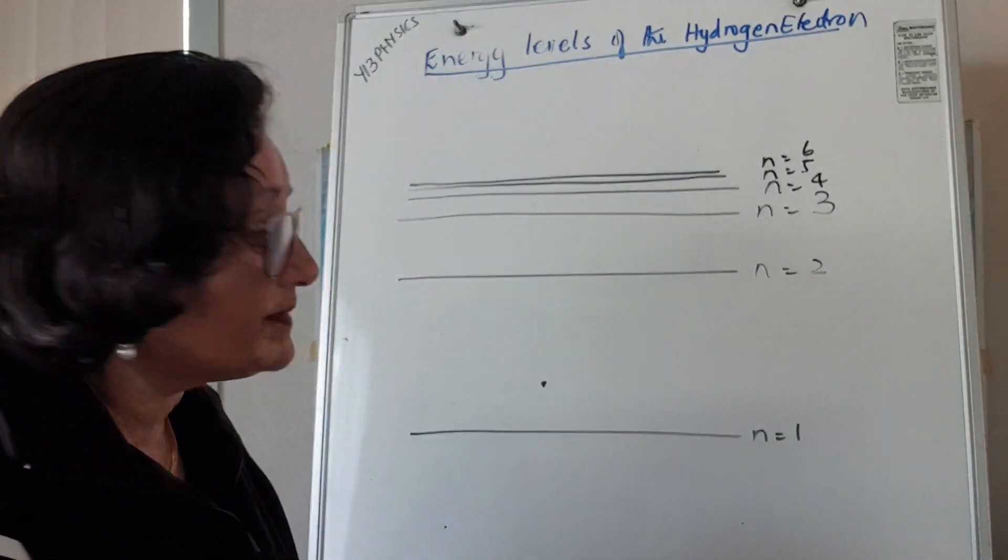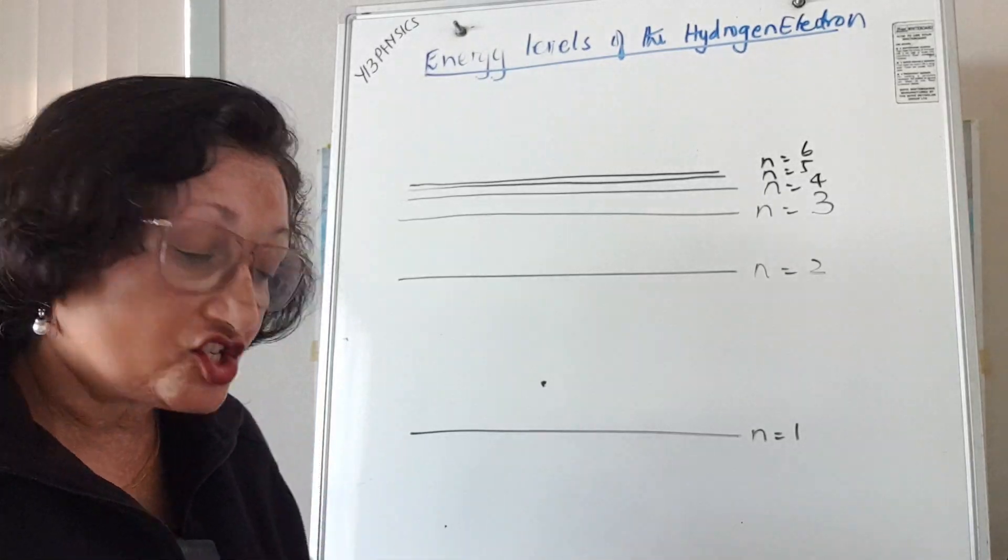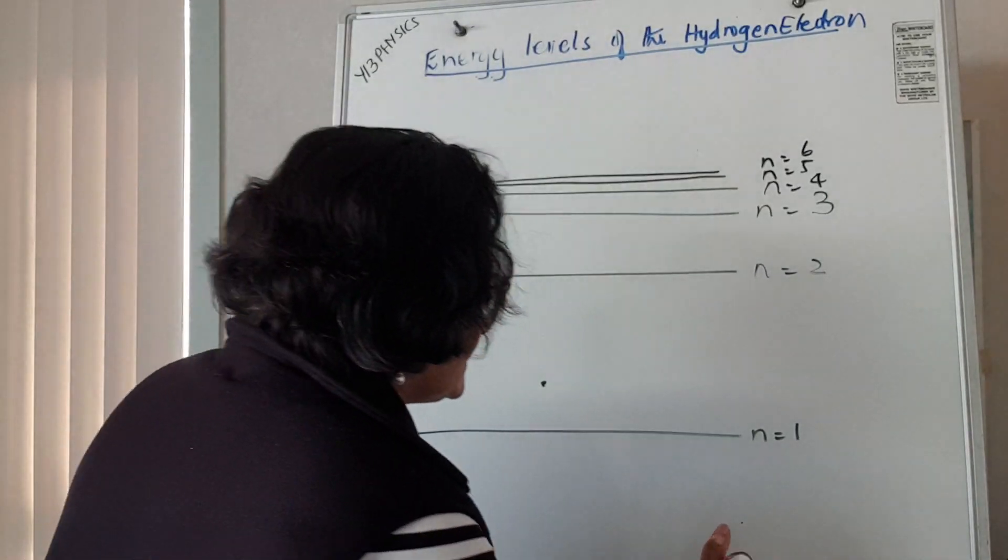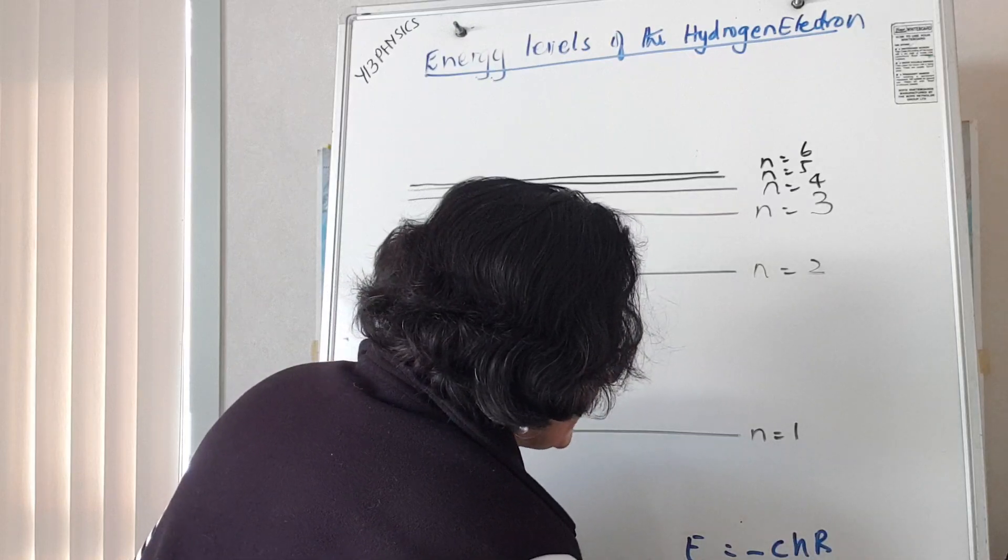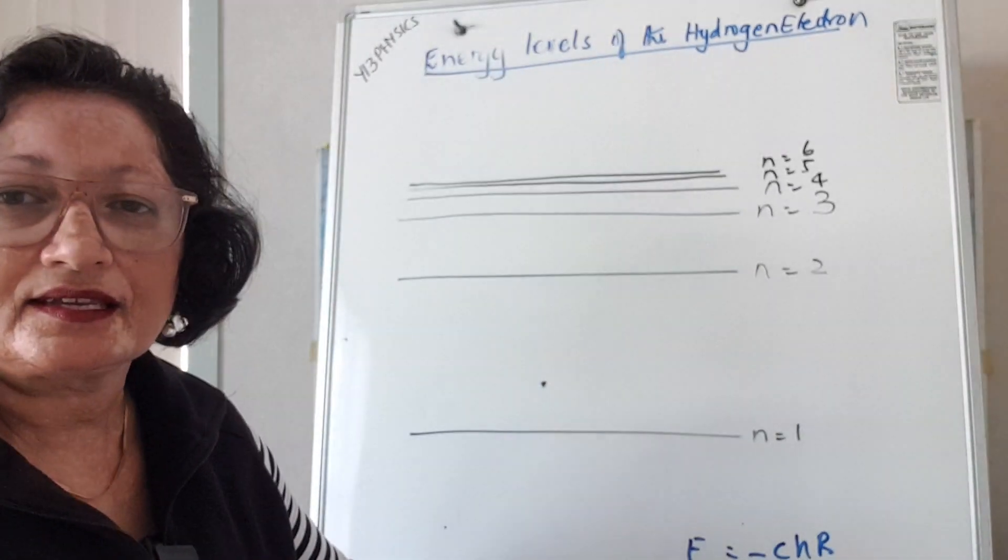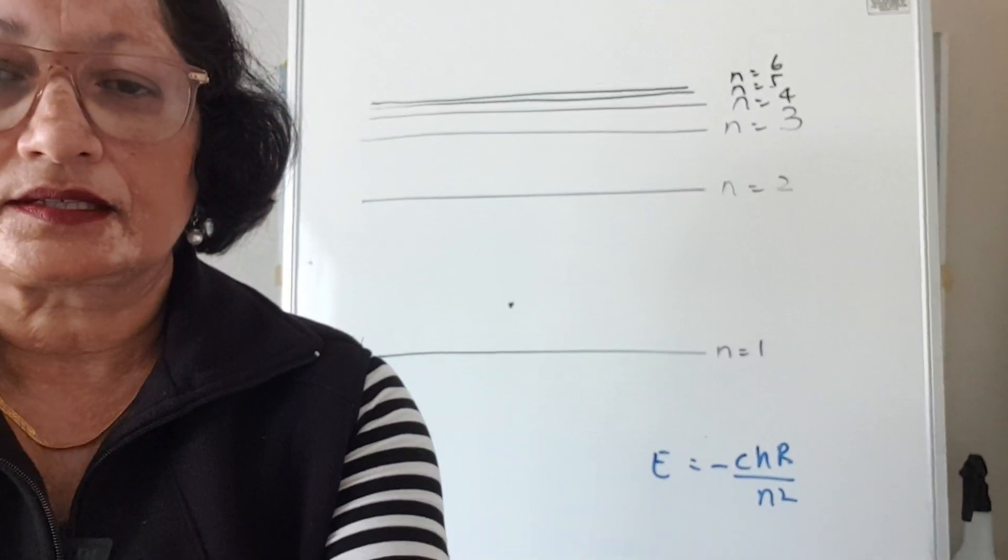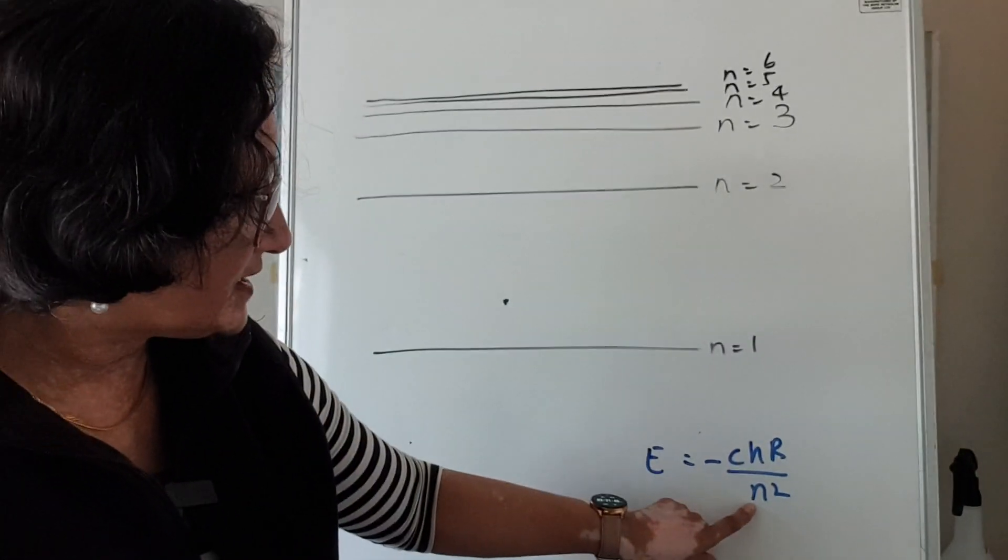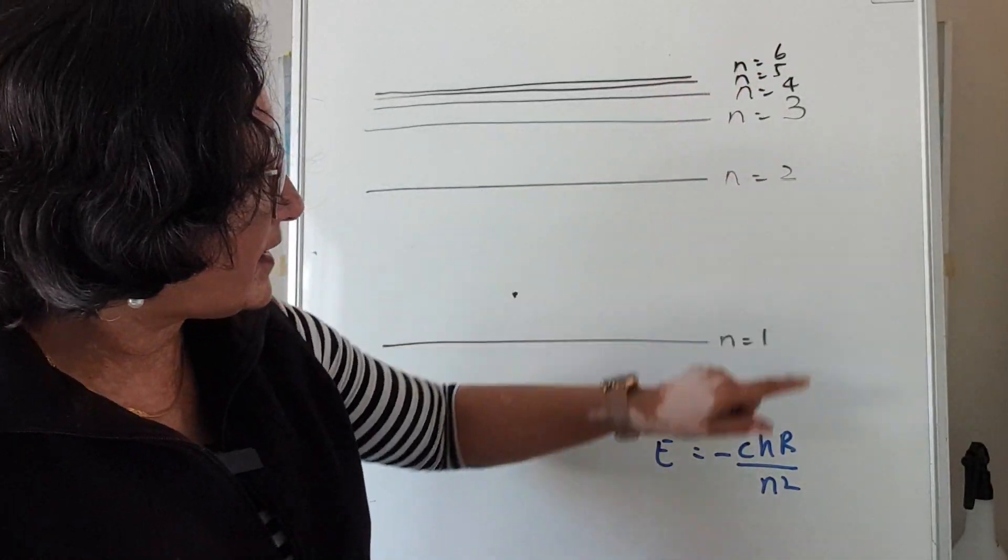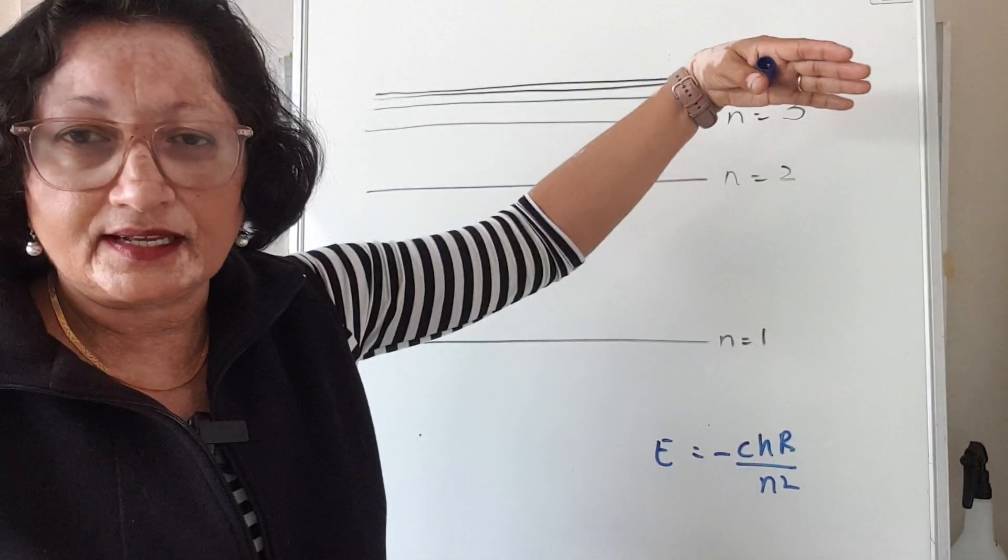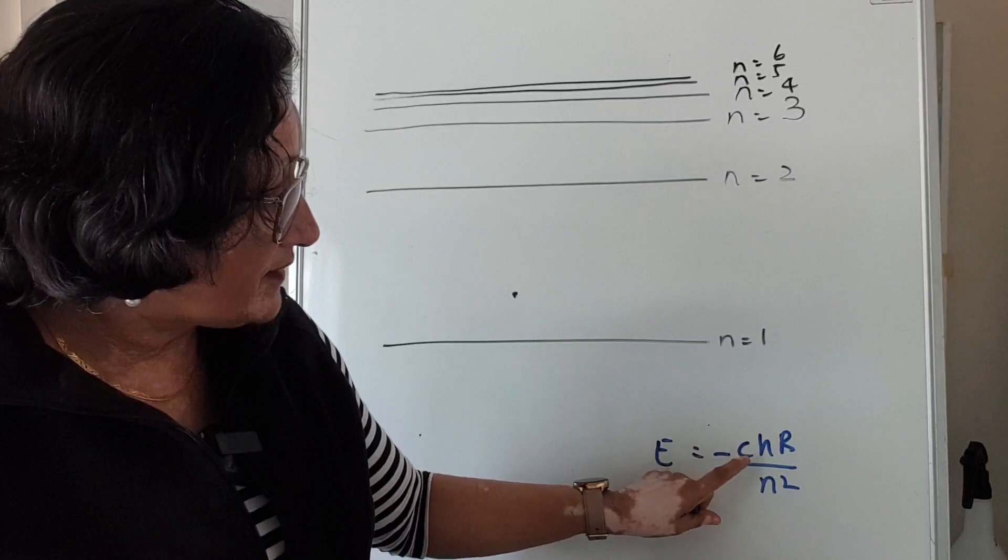n is the quantum level. So n is the energy of the quantum level and it's given 1, 2, 3, 4, 5, and 6 and it can go on to infinity. Now the value for c, c is the speed of light which is 3 times 10 to the power of 8 meters per second.